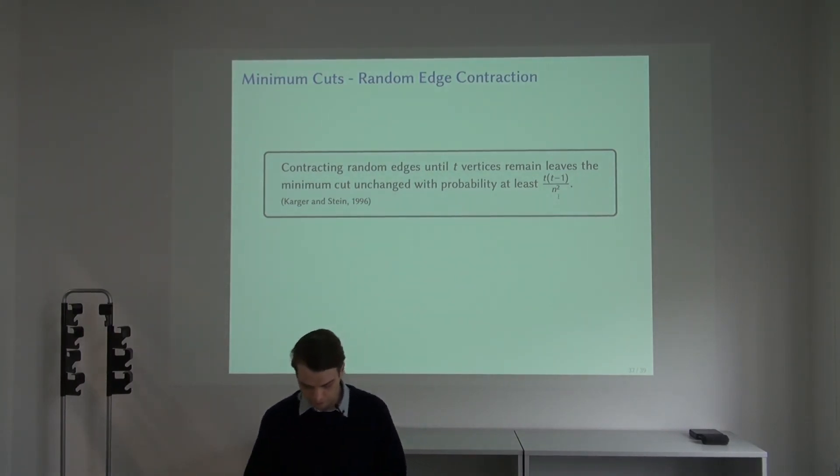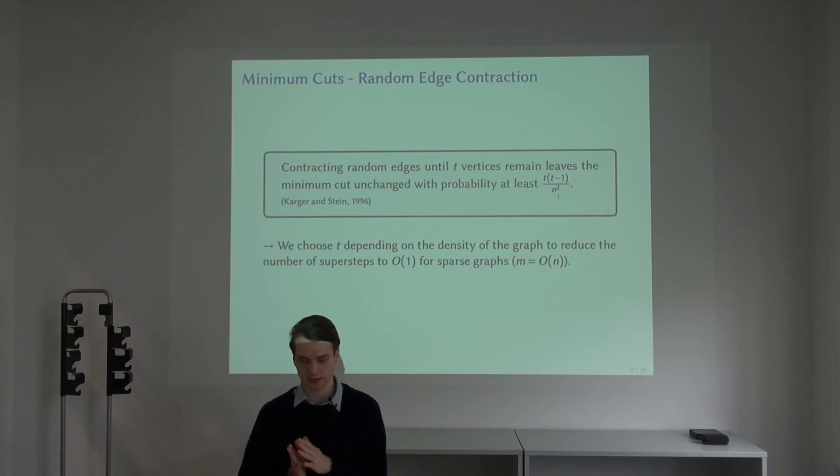For our work, it was important to choose this parameter depending on the density of the graph. With the special choice that we make, this is what enables us to have fewer super steps on the sparse graphs. This is also what allowed us to have good performance in practice on sparse graphs. Basically this whole recursion that you would have otherwise just collapses, and there is very little communication across the processors.